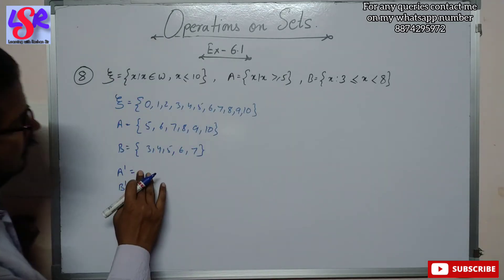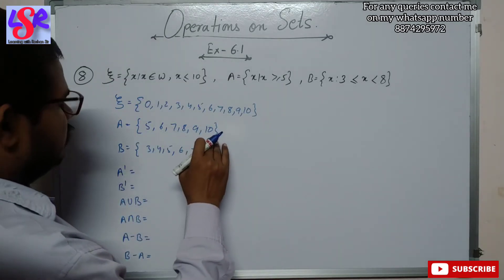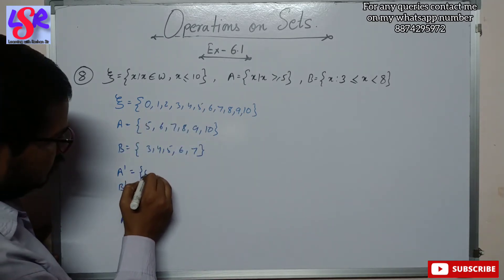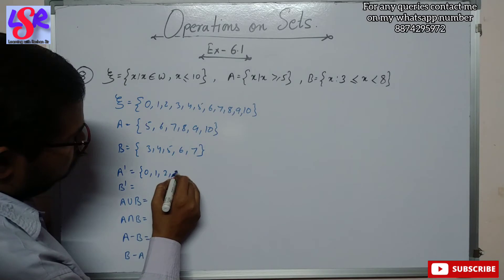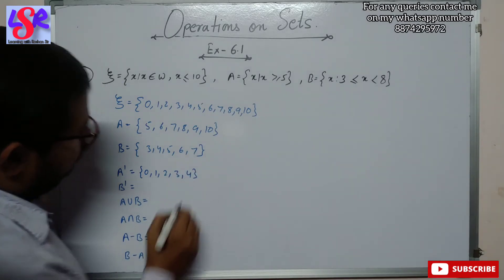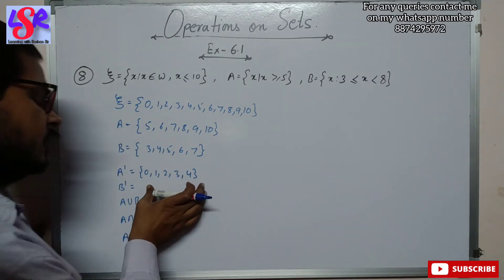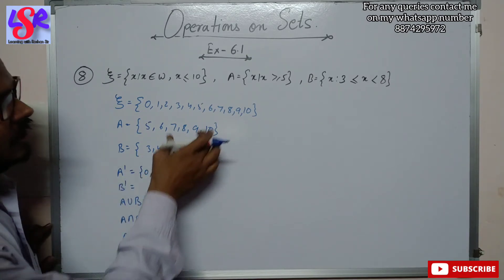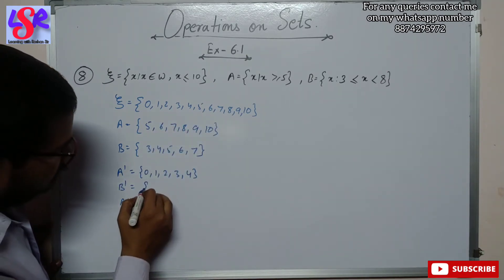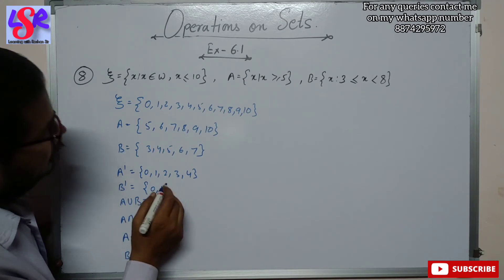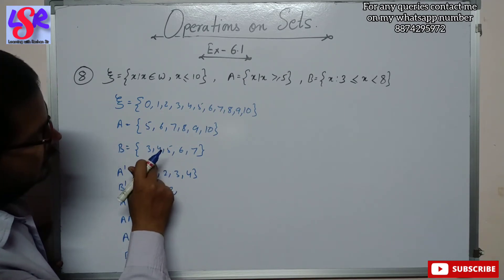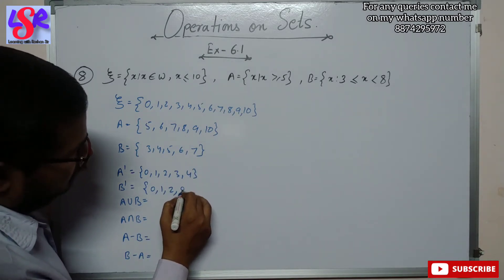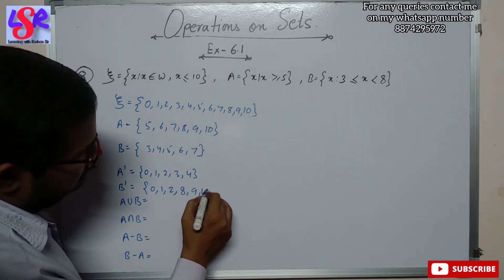A complement contains all terms in the universal set not in A: {0, 1, 2, 3, 4}. B complement contains all terms not in B — excluding 3, 4, 5, 6, 7 — so B complement = {0, 1, 2, 8, 9, 10}.